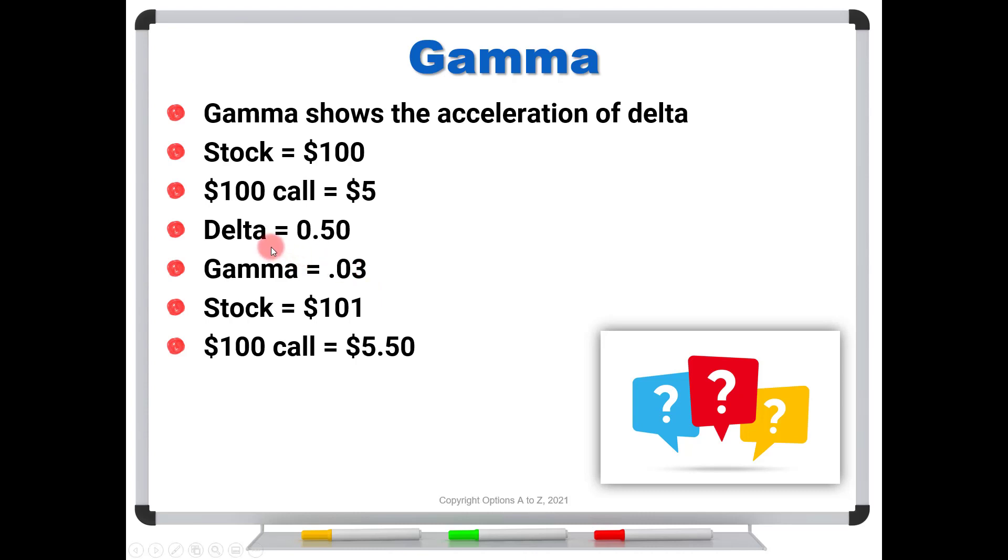So we know that we're going to get a new delta with the stock now at $101. But what is that new delta? That's where gamma comes in. Your delta is going to pick up gamma. So we would expect the delta would increase from 50 to 53. And again, that's just delta plus gamma.